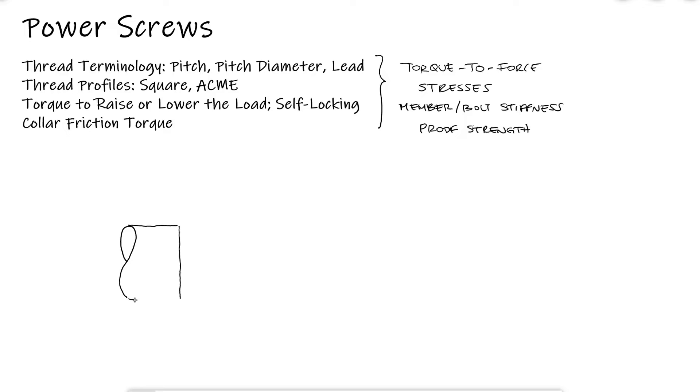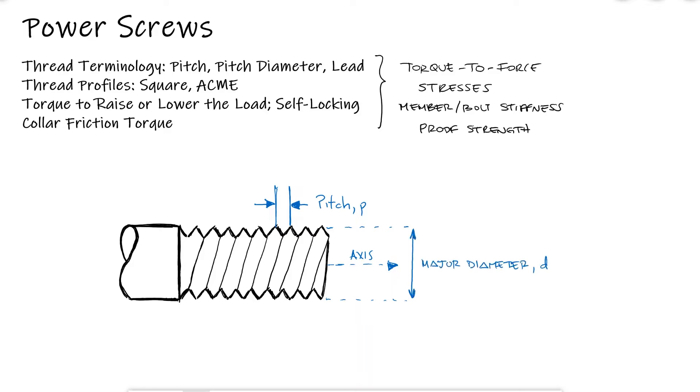Looking at a screw with sharp V threads we can easily identify some frequently used terms. The pitch is the distance between adjacent crests in the direction of the axis. The major diameter d is the largest diameter from crest to crest. The minor or root diameter dr is the smallest diameter or diameter of the stem. The pitch diameter dp is a theoretical diameter between the two and is probably the most important one used for many expressions we will derive. The thread angle is usually referred to as two alpha.